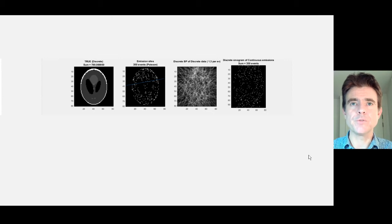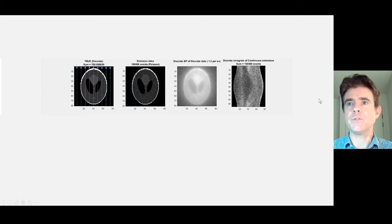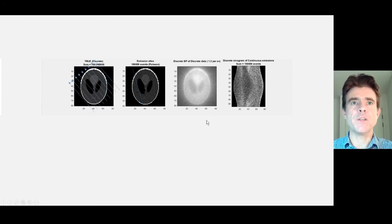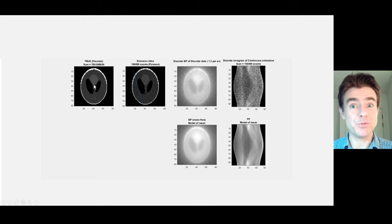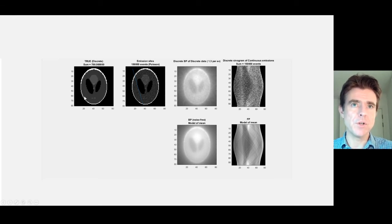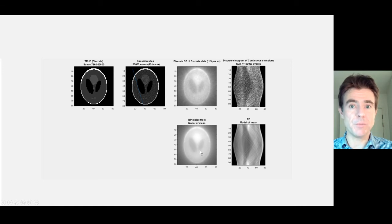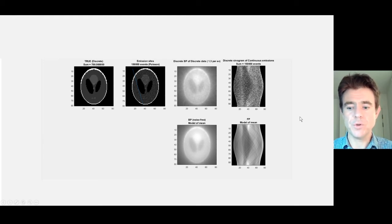Carrying on with the Shepp-Logan phantom: I'm simulating various back-to-back photon pairs, collecting sinogram data, and back-projecting into that array. As I collect more events, this rapidly fills up with counts — there I've got 150,000 counts. Using that same model, I get a model of the mean and a back-projected image. This is really as good as it gets for modelling the mean, because I used the ground truth. In general during an iterative reconstruction, we'd have some current improved estimate of the image, which we'd then forward-model to get the corresponding model of the mean.